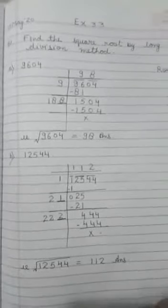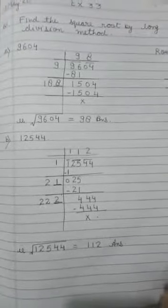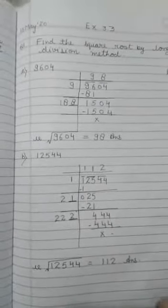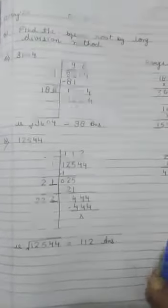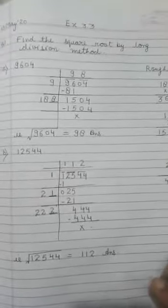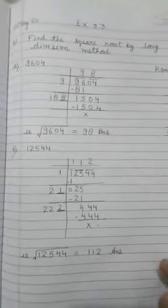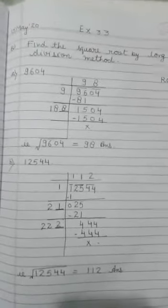This method seems a little difficult at first, but it is a very short and easy method. Once you practice it, you will find it very easy. Please listen to my instructions and redo these numbers on your own. For homework, I'm not giving new questions — take the questions you did using prime factorization in Exercise 3.2, and solve them again using the long division method in your rough copy to check if your answers are correct. Tomorrow we will discuss this method again and resolve any queries. Thank you, class.